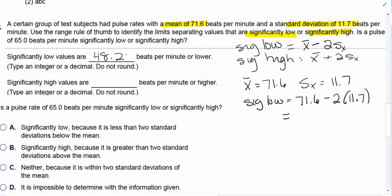Significantly high values would be the mean plus two standard deviations. So we have 71.6 plus two times 11.7, which would be 95.